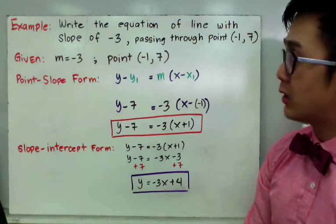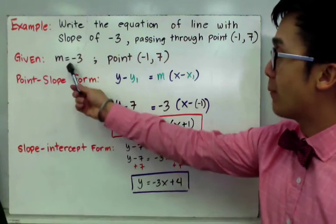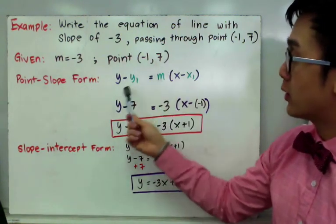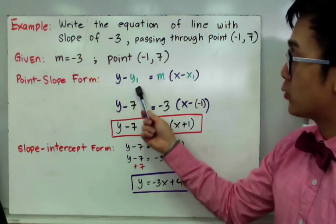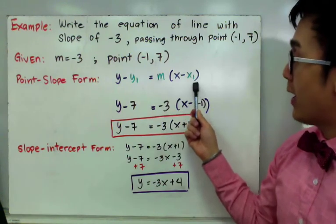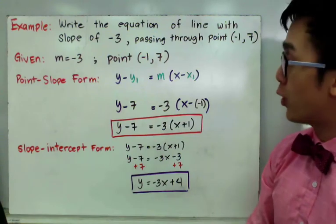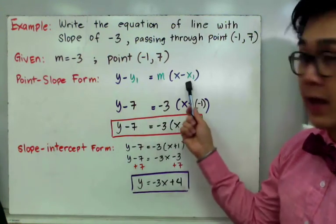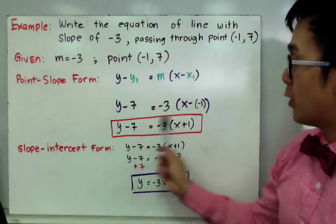From the title itself, we'll be able to easily use the point-slope form to write the equation of a line. So if m is negative 3 and the point is negative 1 and 7, all we need to do is use the formula of the point-slope form: y minus y-sub-1 equal to m times x minus x-sub-1. In this case, there are two y's and two x's in your formula. What you will change is your y-sub-1 and x-sub-1, and you will leave your y and x as in the original formula.